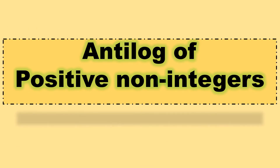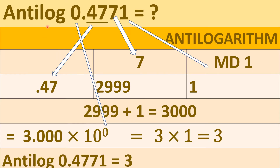Now let us switch over to anti-log of positive non-integers. We shall take an example: anti-log of 0.4771. Here 0 is the characteristic, and after the decimal we have 4771, that is the mantissa. After the decimal we have to take two digits, so here we have 47 as that number. In the row of 0.47, under the column 7, we have to search in the log book.